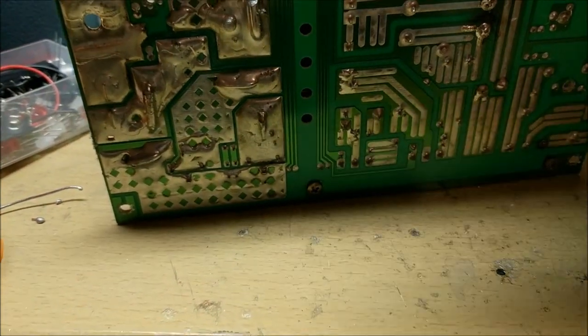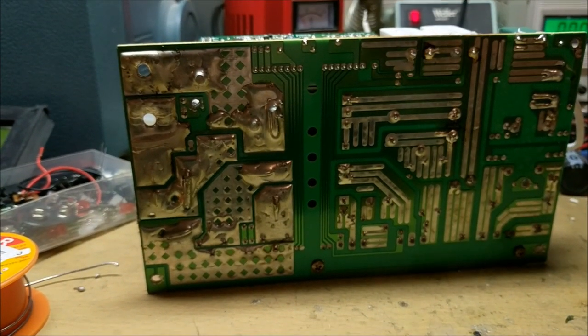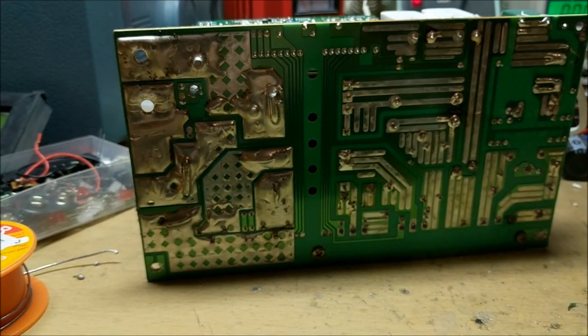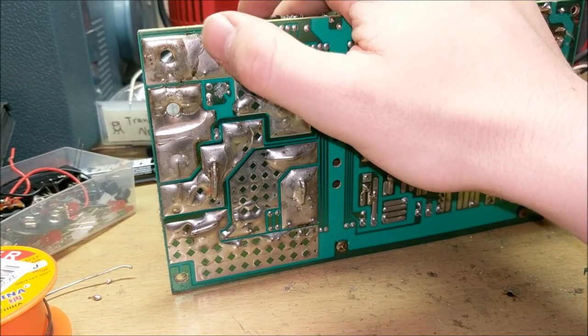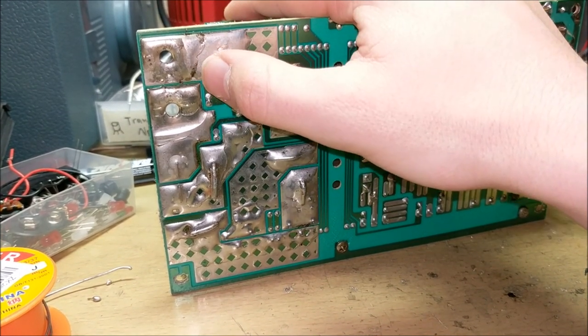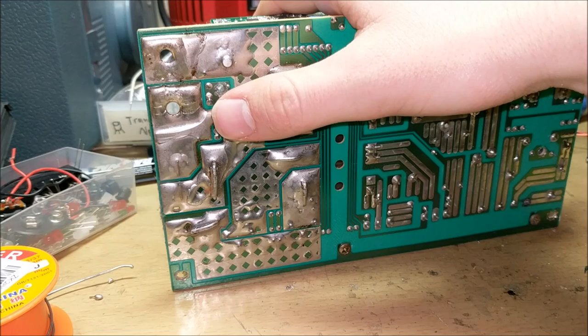I'll start by flipping it over to look at the circuit board underneath. As you can see, this has some pretty heavy-duty solder traces. The reason behind these heavy-duty traces is all the high amperage this circuit board has to conduct.